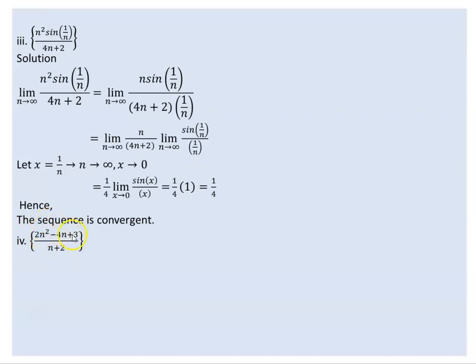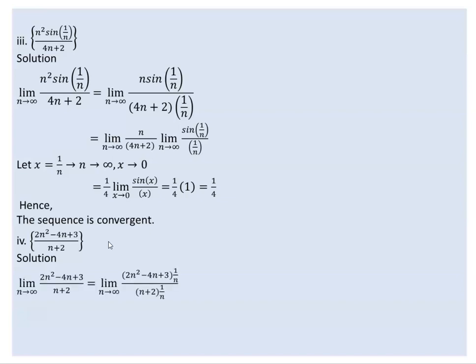The numerator is growing at a faster rate compared to the denominator. Now let us introduce the limit as n goes to infinity for the sequence 2n squared minus 4n plus 3 over (n plus 2).